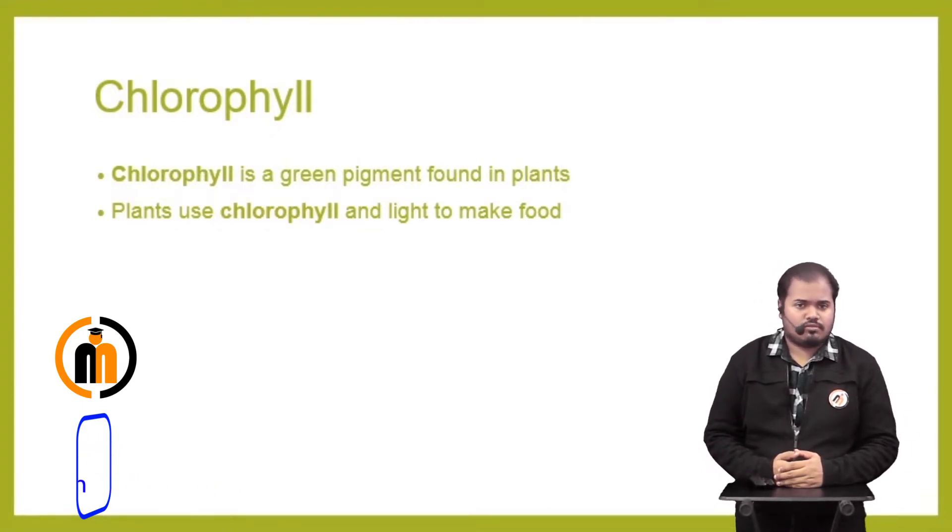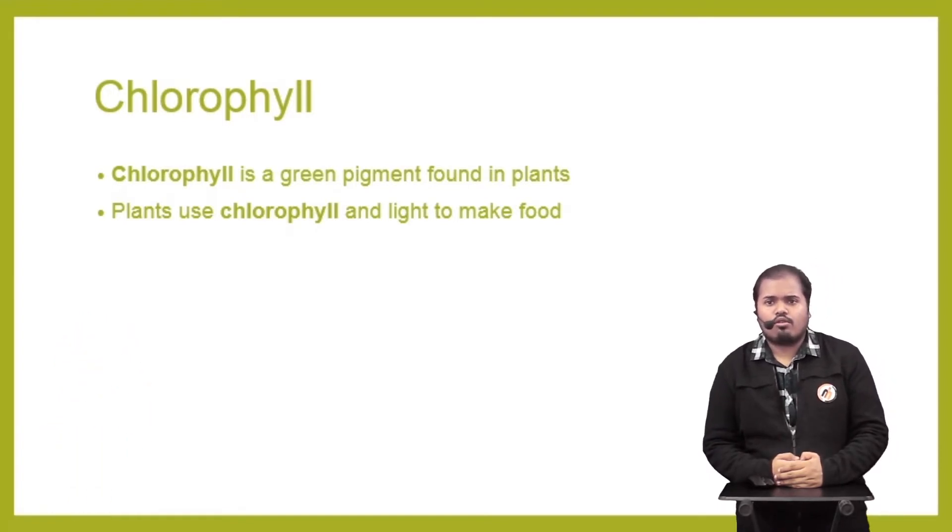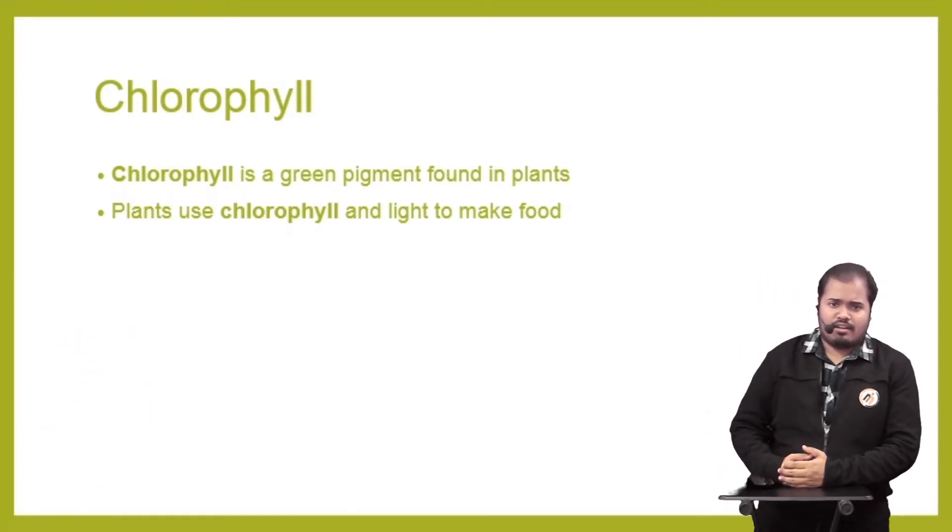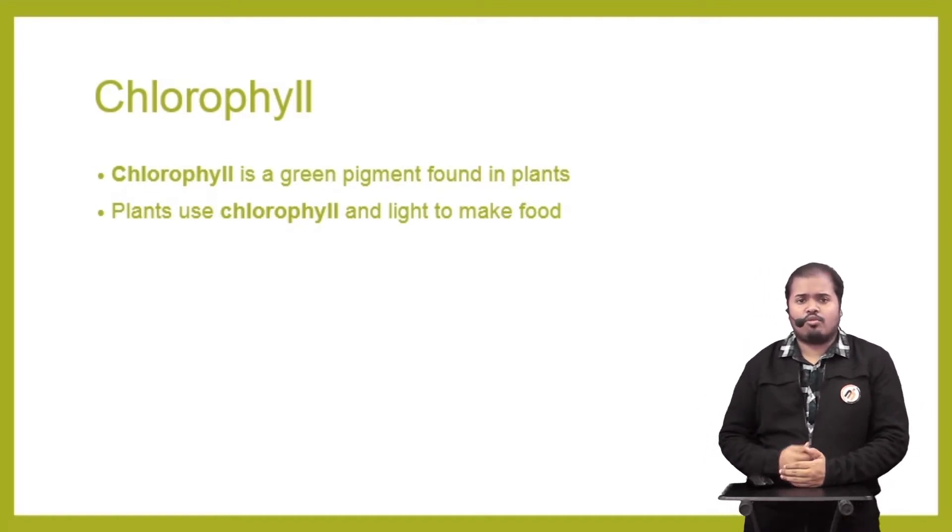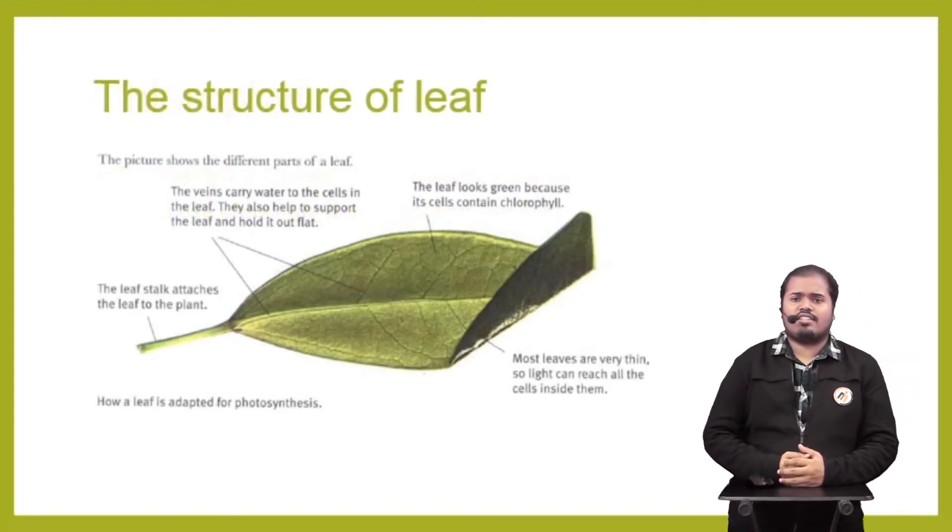How do they make food? They make food with the help of chlorophyll. Chlorophyll is a green pigment found in plants, especially in leaves. Plants use chlorophyll and light to make food.